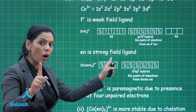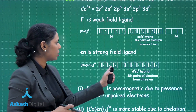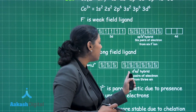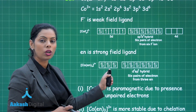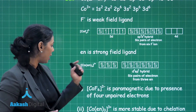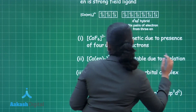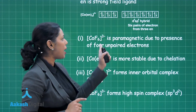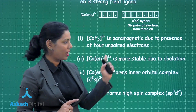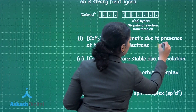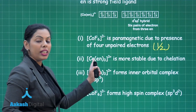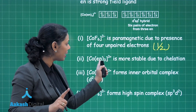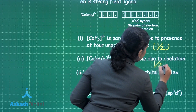Ethane-1,2-diamine (en) is a strong field ligand. It causes pairing in the 3d orbital, and the hybridization becomes d²sp³, making it the inner orbital complex. In this case, there are no unpaired electrons, so it is diamagnetic in nature with low spin. The [Co(en)₃]³⁺ complex is also more stable because en is a chelating ligand, providing chelation.